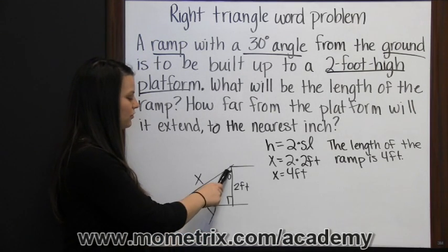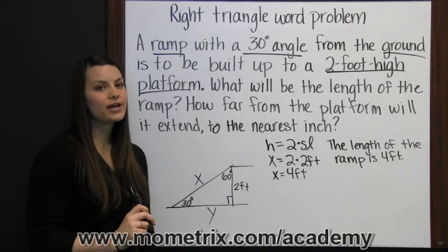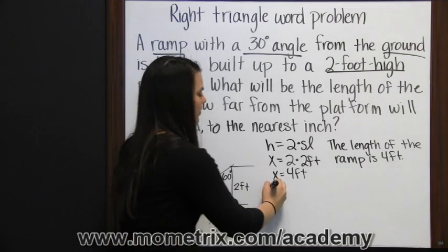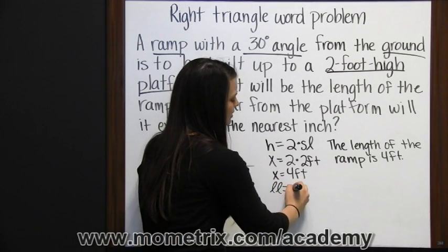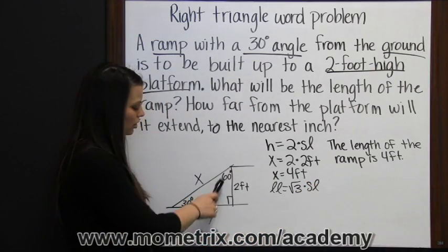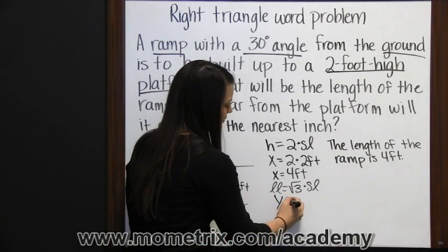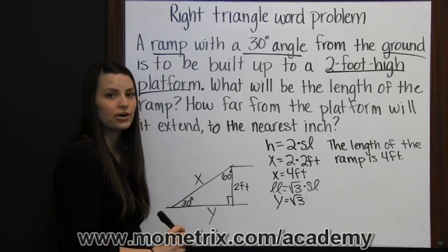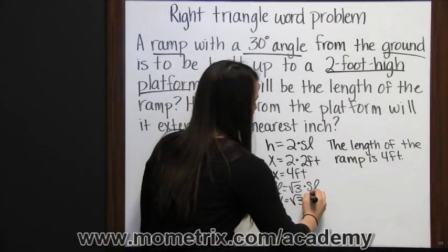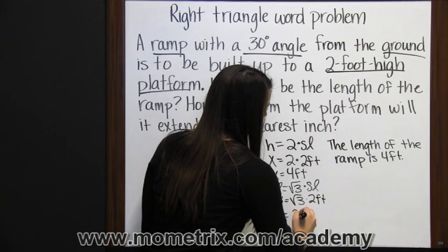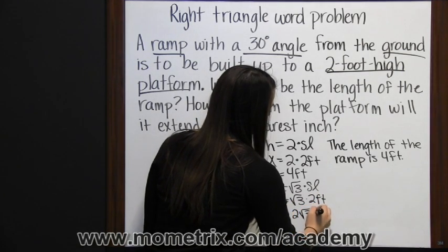And y is across from our 60 degree angle, so that's our longer leg. And the longer leg of a 30, 60, 90 triangle is the square root of three times the shorter leg. Our longer leg, again, is y, equals the square root of three times, and our shorter leg is still that two foot length. So y is two square roots of three feet.